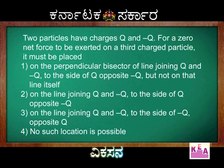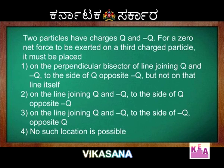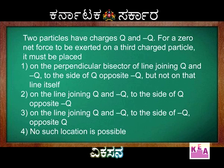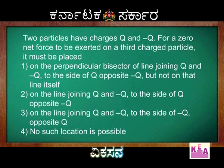Two particles have the charges Q and minus Q. For a zero net force to be exerted on the third charged particle, it must be placed: first option, on the perpendicular bisector of the line joining Q and minus Q but not on the line itself; second, on the line joining Q and minus Q to the side of Q opposite to minus Q; third, on the line joining Q and minus Q to the side of minus Q but opposite to Q; fourth, no such location is possible.